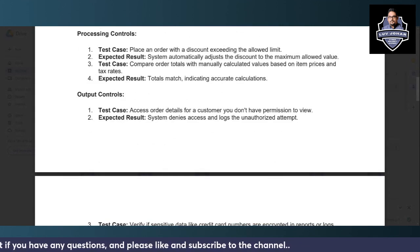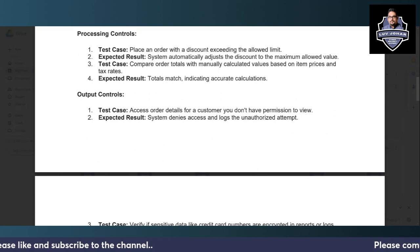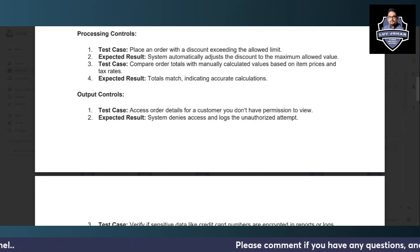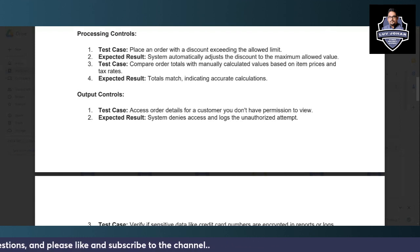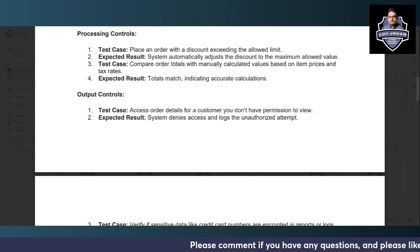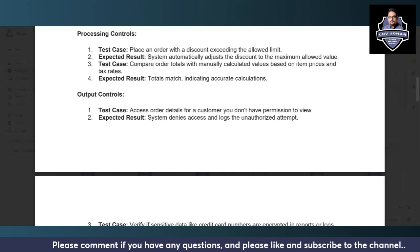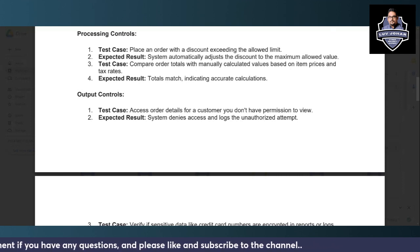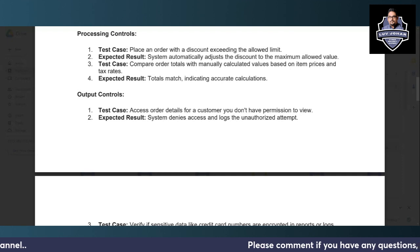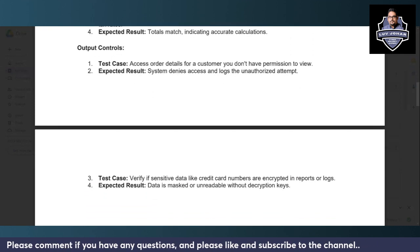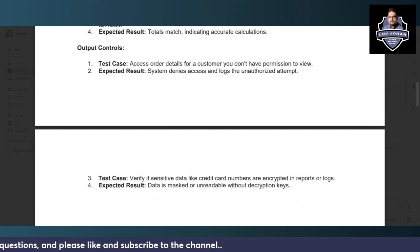For processing controls in the e-commerce application, try to place an order with a discount exceeding the allowable limit — the system should automatically adjust the discount to the maximum allowable value, not the value you selected. After that, compare order totals with manually calculated values based on items sold and applicable tax; the totals should match, indicating that accurate calculations are being performed by the application.